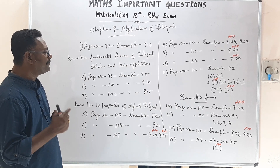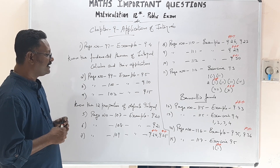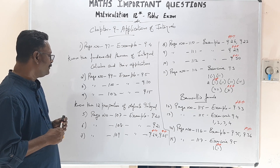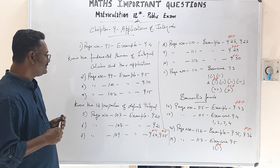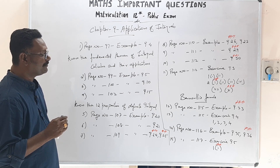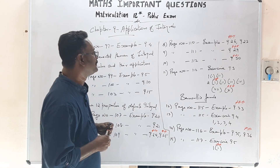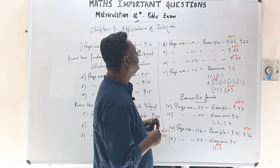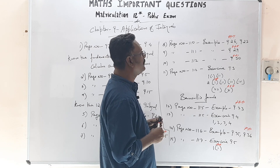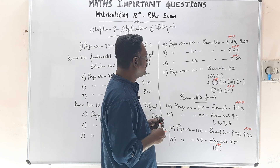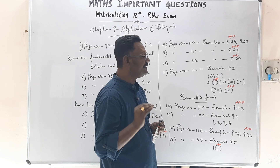12 properties of definite integrals — go through. Page 107, Example 9.20. Page 108, Examples 9.20 and 9.21. Page 109, Examples 9.24 and 9.25 are important sums. Page 110, Examples 9.26 and 9.27. Page 111, Example 9.29. Page 112, Example 9.30 are very important sums.